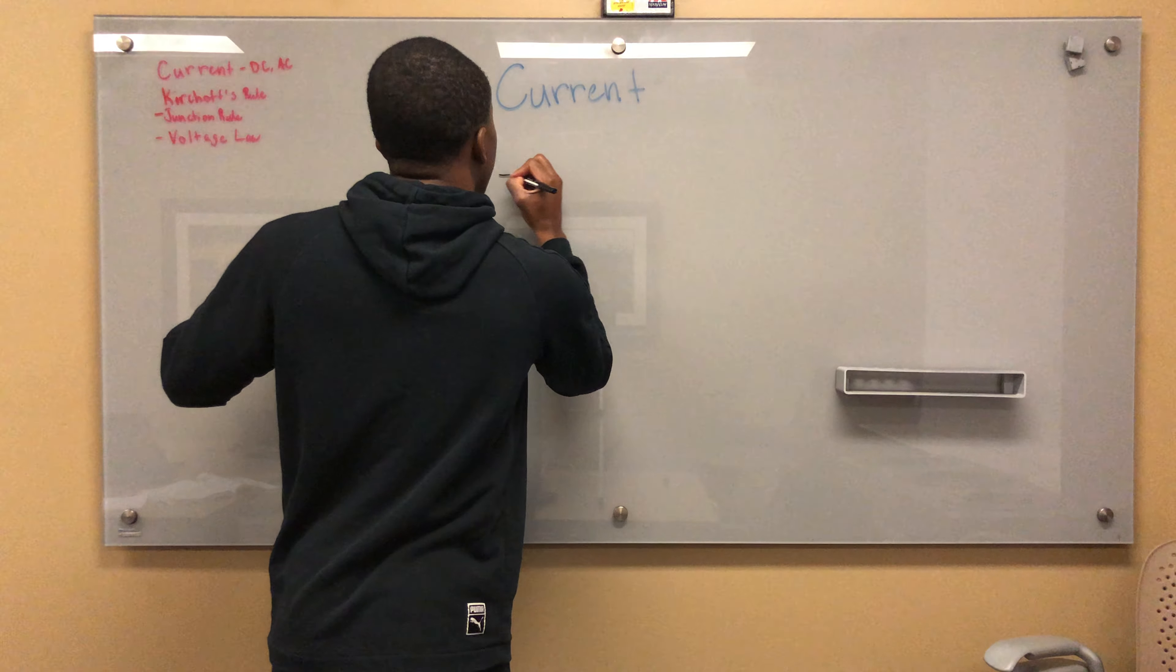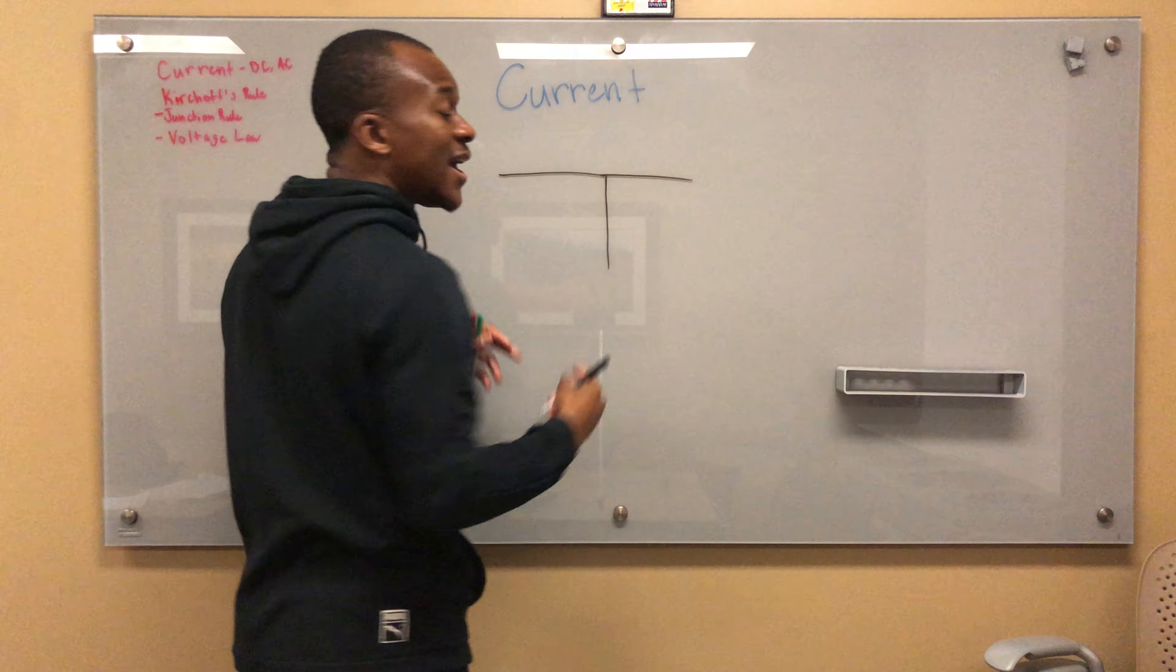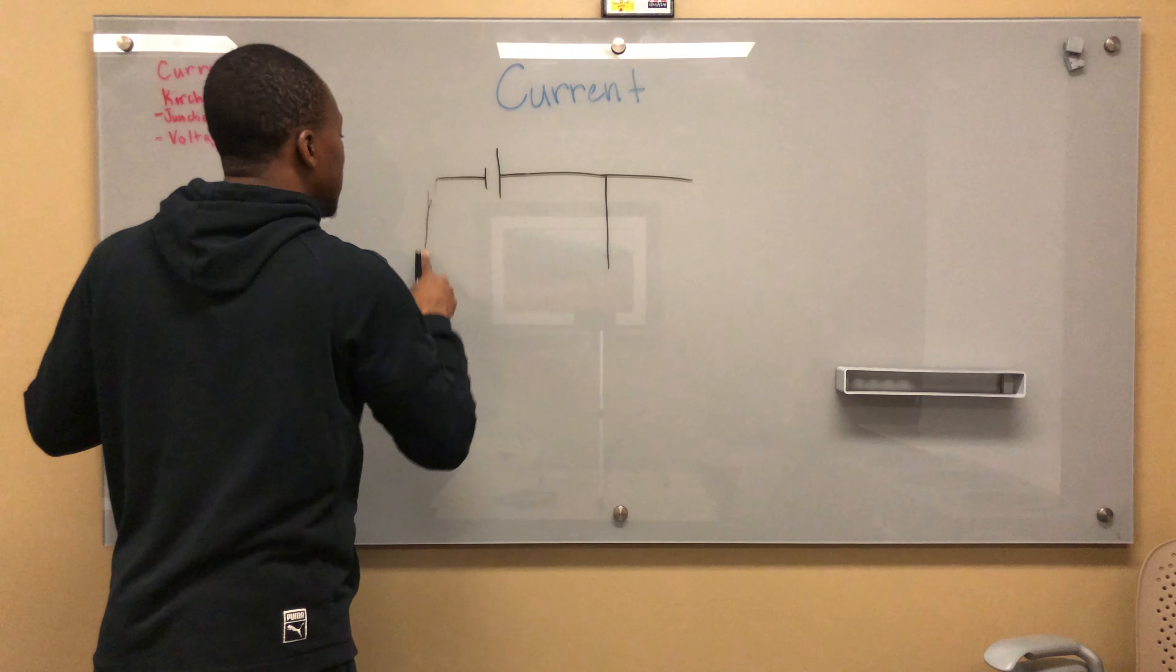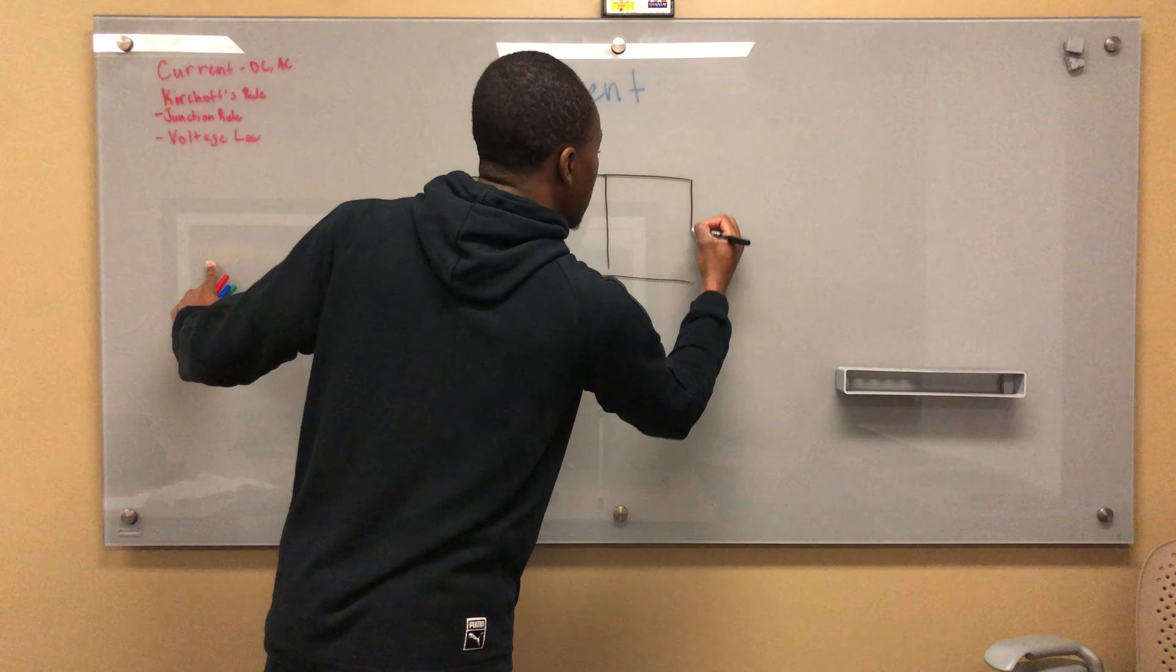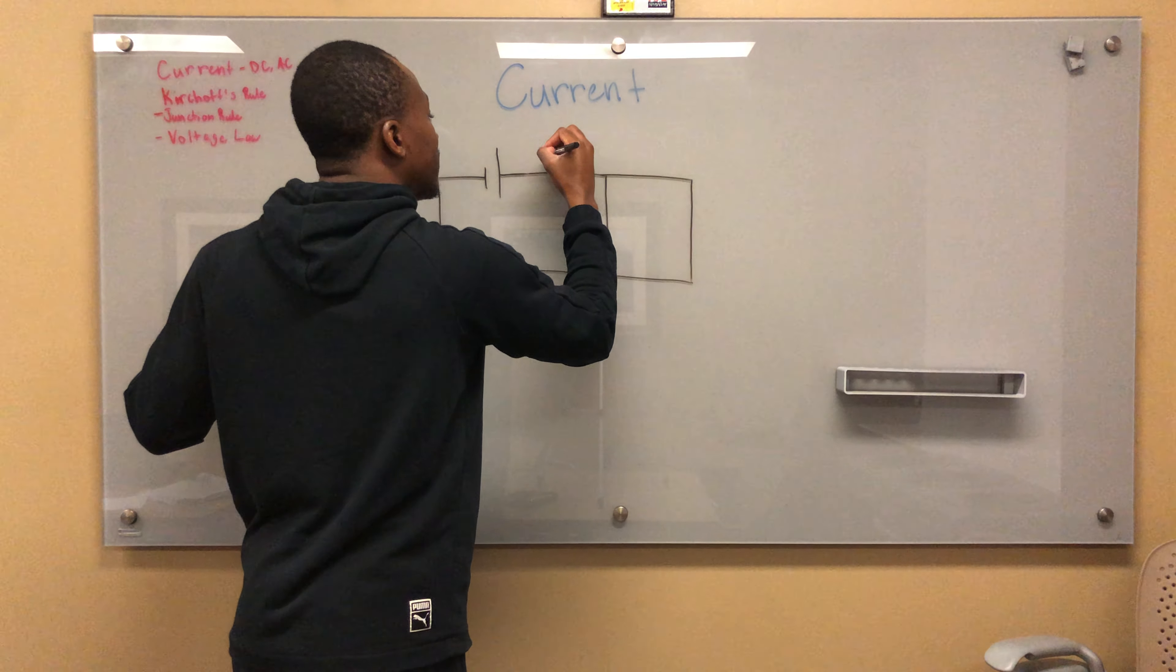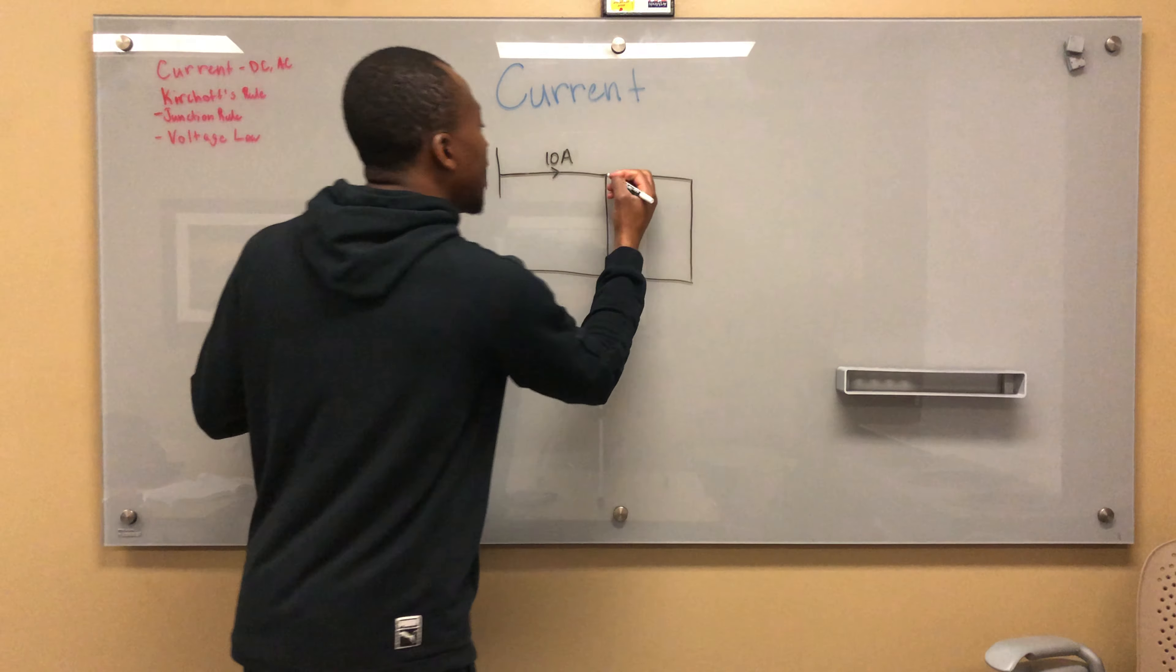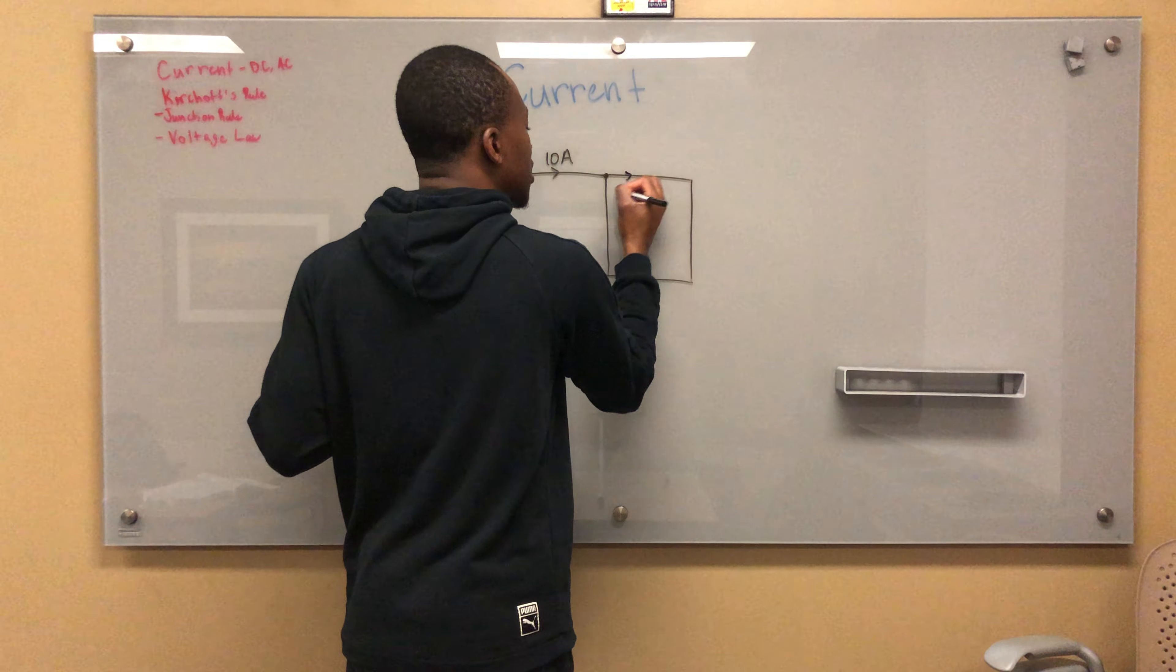Let's say I have a circuit that's traveling like this, and it divides up. Let's say this is my source, and the circuit has to be complete. My current is traveling this way. Let's say I have ten amps traveling along there, but it hits like a fork, right? So some of the current goes this way and some of the current goes this way.